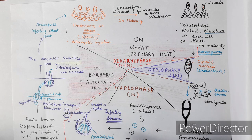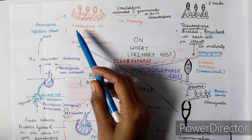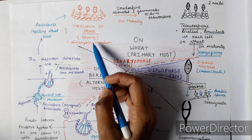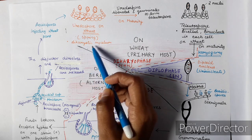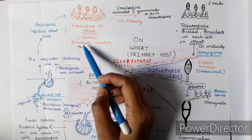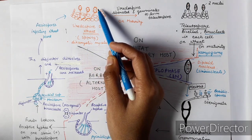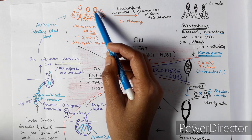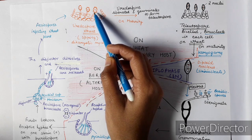Let's start the life cycle of Puccinia. First, the uredospore is a kind of spore which germinates on wheat in the spring season. Uredospores consist of dikaryotic mycelium, meaning the mycelium has two nuclei. A uredospore is a small circular structure that is single-celled with two nuclei. The outer wall is slightly thick and the inner wall is thin.